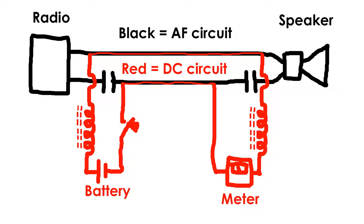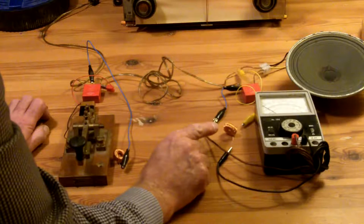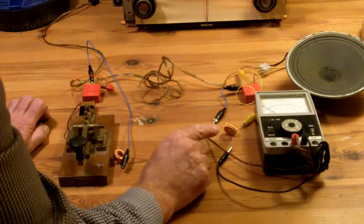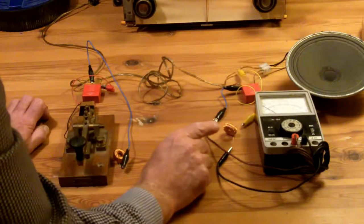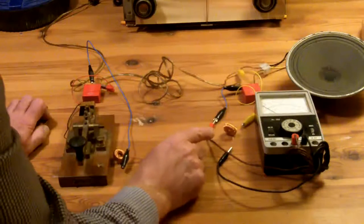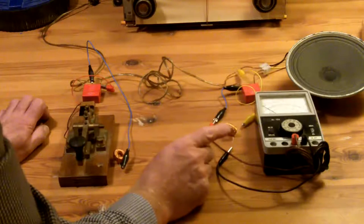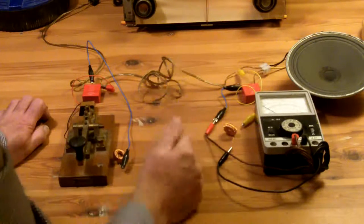As I say, I didn't want to have to go into details about the chokes, but the chokes are providing a high impedance path to the audio frequency. So that is, the music or the speech can't get into the meter, so we don't see it on the meter. And it can't get into the battery. These are 1H chokes, so they stop the audio signal.